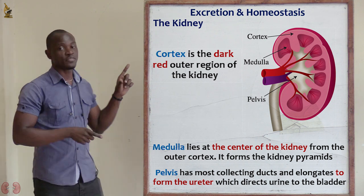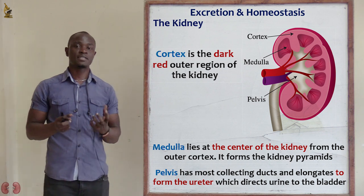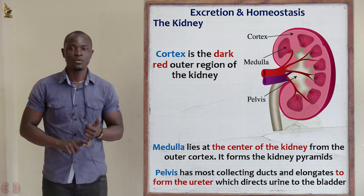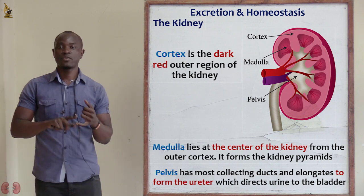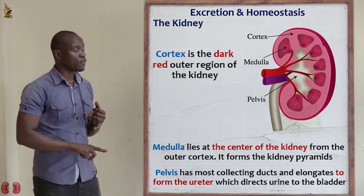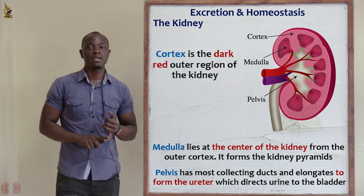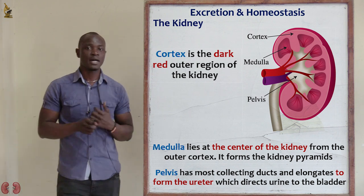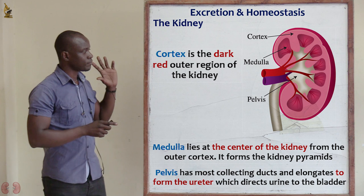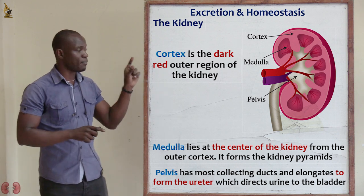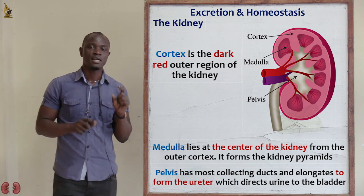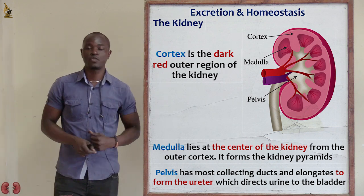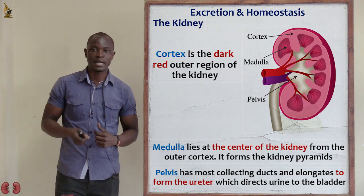To summarize this diagram of the kidney: we have the cortex, which is the outer covering, dark red in color. We have the medulla, which is the middle region containing the pyramids where the nephrons are found. And finally, we have the pelvis, which forms the ureter, connected to the urinary bladder.